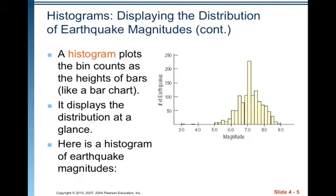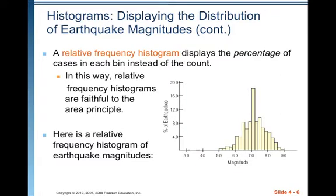Here is a histogram of earthquake magnitudes. It looks very much like a bar chart, but notice there's no space between the bars unless there's an actual gap in the data. That's because on the horizontal axis you've got a continuous quantitative variable — not just categories, but actual quantitative values that represent the span across the bottom. A relative frequency histogram displays the percentage of cases in each bin instead of the count, making it faithful to the area principle. Here is a relative frequency histogram of the earthquake magnitudes.